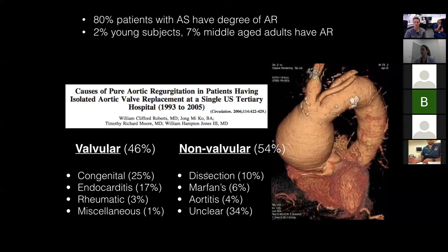On the aortopathy side, dissection flaps, aneurysmal aortas, and aortitis can all be associated with severe AR, which can often be eccentric. We've got to use all the modalities available to assess valvular severity, just as we do with aortic stenosis.